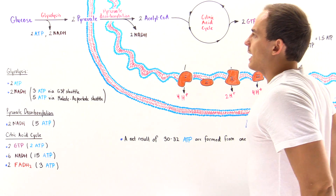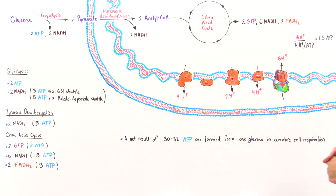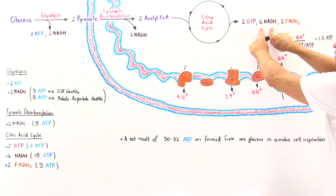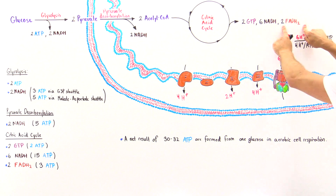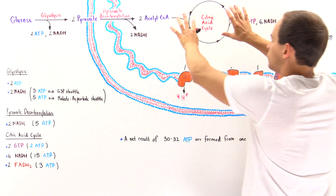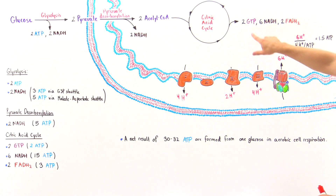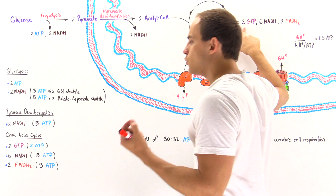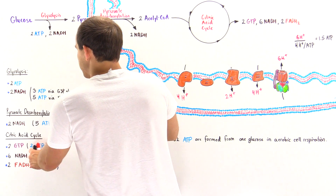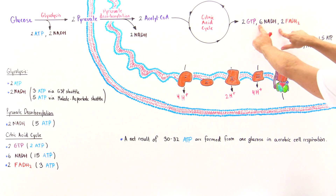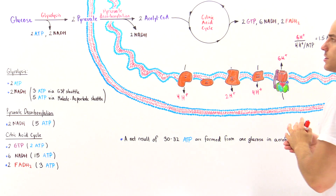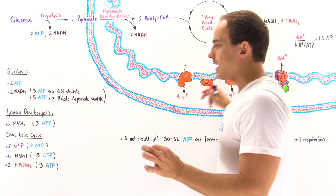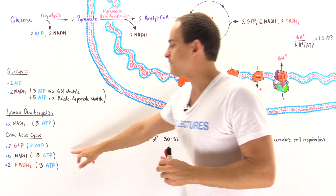The majority of NADH are produced in the citric acid cycle. When two acetyl coenzyme A molecules are fed into the citric acid cycle, we produce a net result of 2 GTP, 6 NADH, and 2 FADH₂. The 2 GTP are converted by enzymes into 2 ATP. The 6 NADH, produced in the matrix, each generate 2.5 ATP, so 6 × 2.5 = 15 ATP from citric acid cycle NADH.